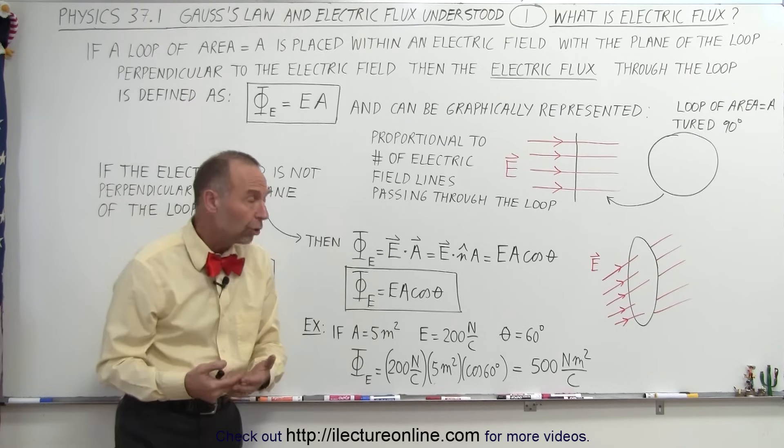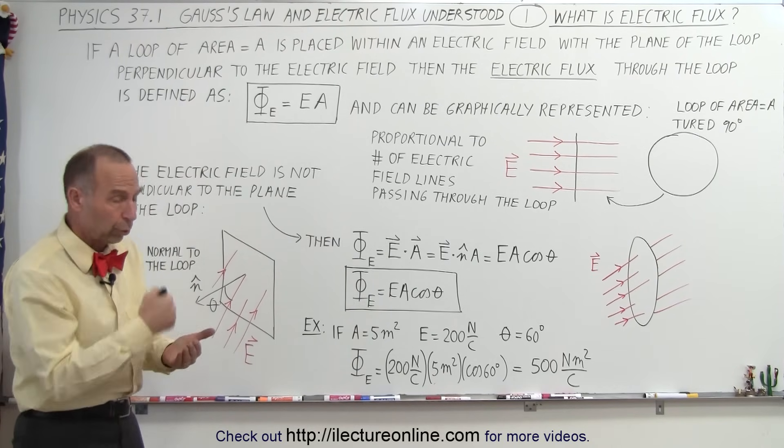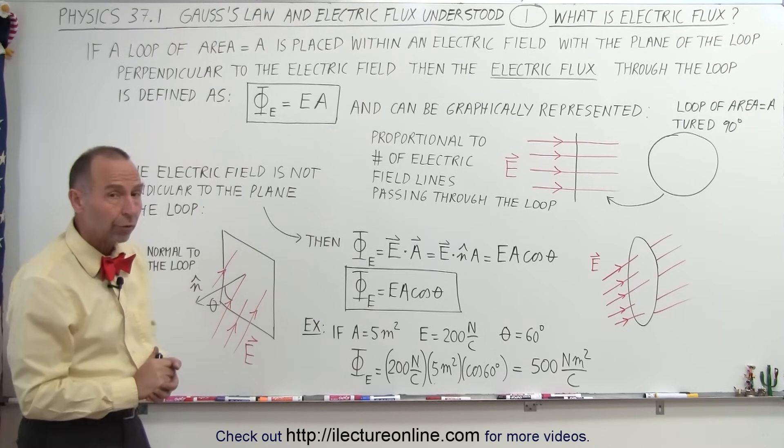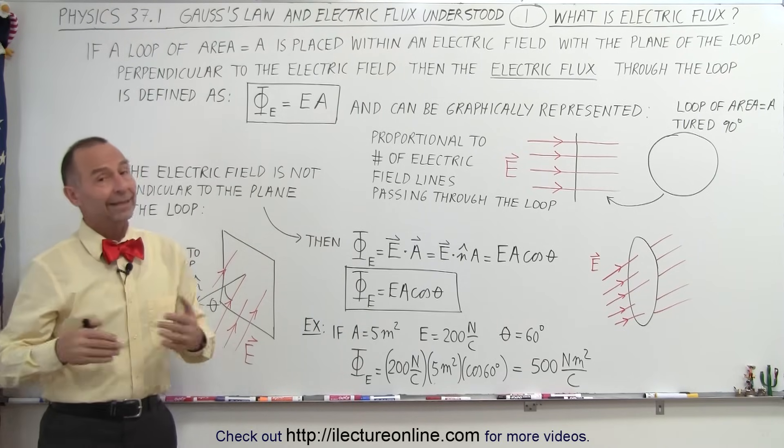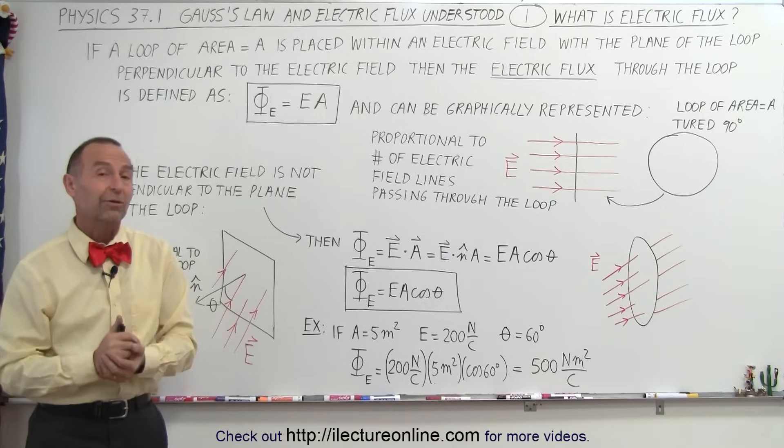That ends up being 500 newton meters squared per coulomb. So you can see that the units for electric flux is newton meters squared per coulomb. It's newtons per coulomb, the units for electric field, and meters squared, the units for area. Hopefully, that kind of straightens out your understanding about what electric flux is.